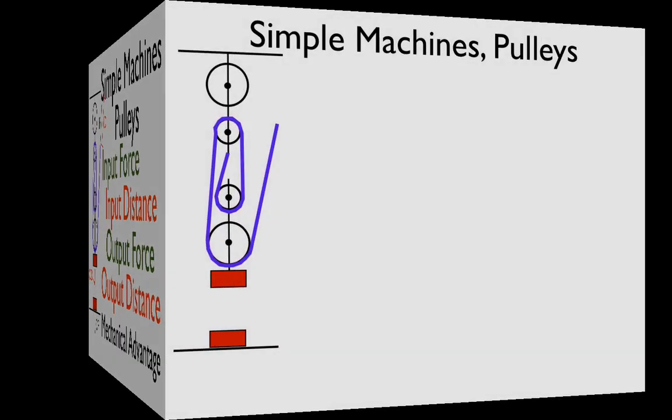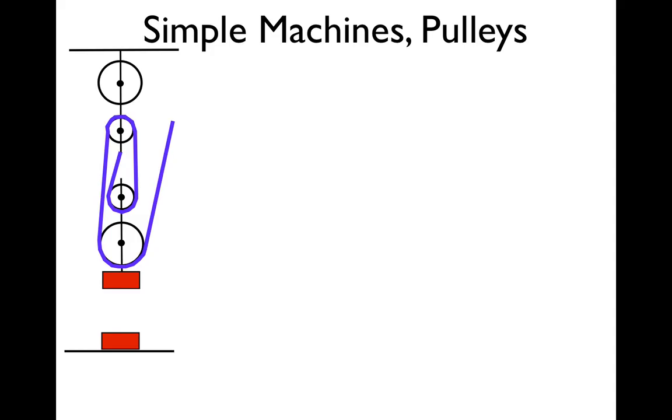Alright, and this is how it works. This is the pulley machine. These are the pulleys. This is the simple machine. We have one pulley, two pulleys, three pulleys, and four pulleys.